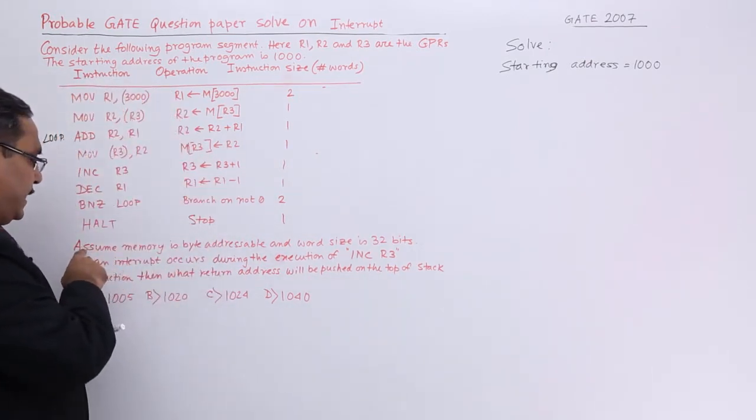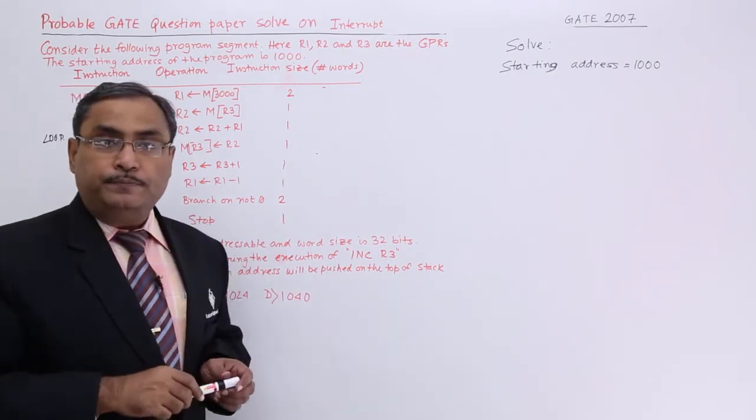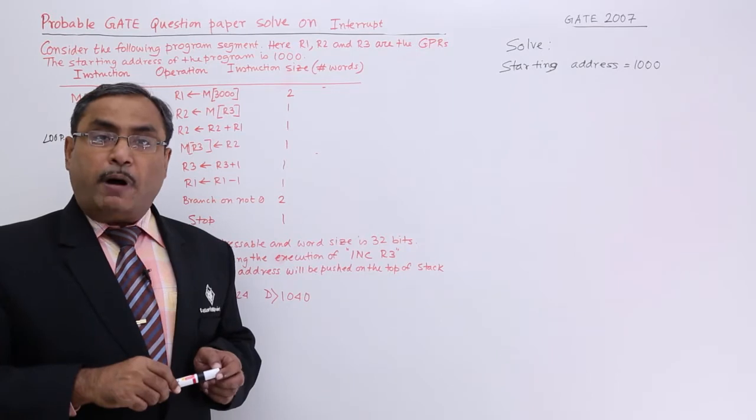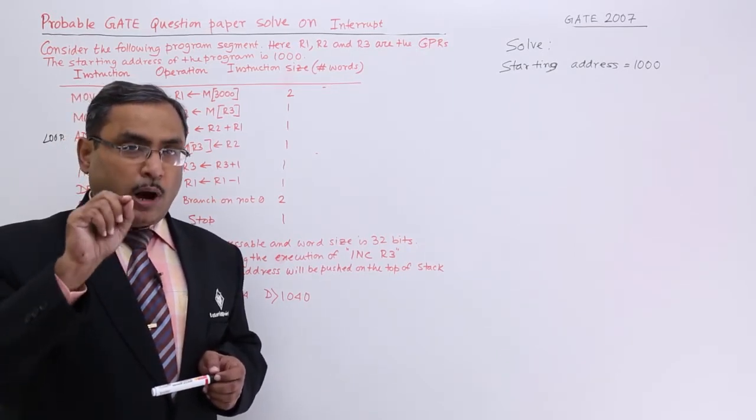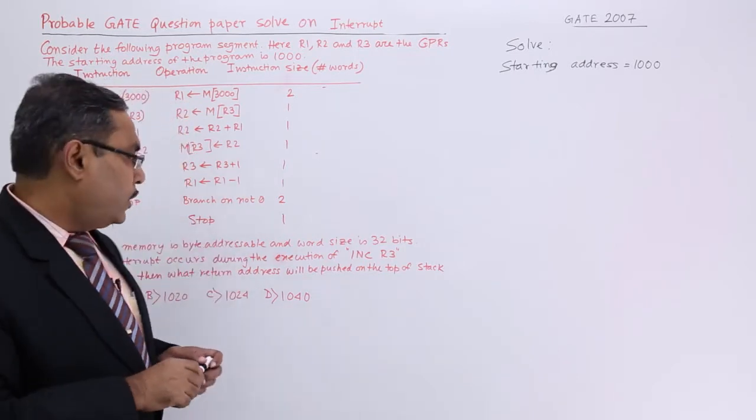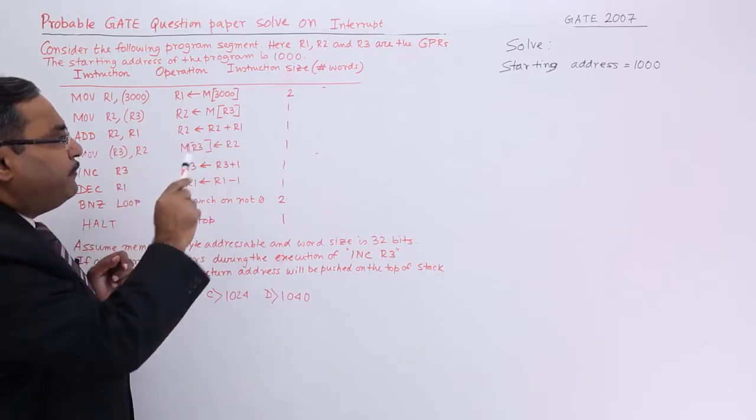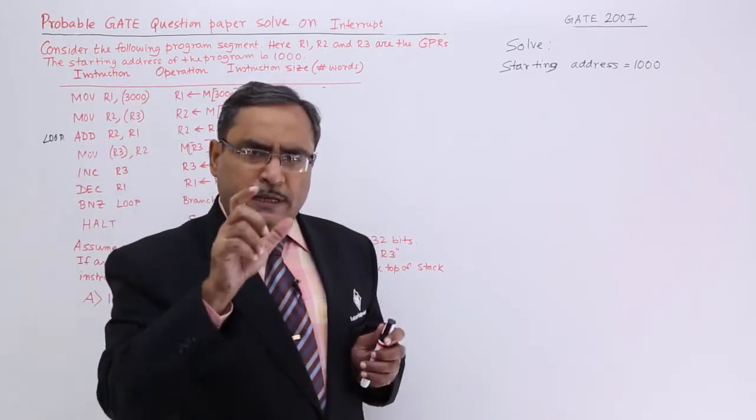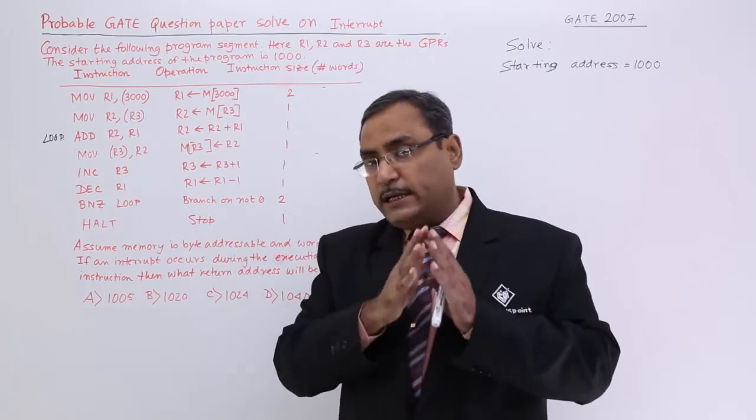Assume memory is byte addressable. Memory is byte addressable that means each and every location of the memory is containing one byte of information. And word size is 32 bits. Each and every word is of 32 bits that means each and every instruction is occupying 4 bytes in the computer's memory.